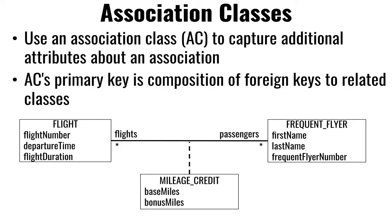In UML, it's documented differently. A mapping class would just be two references — one-to-many and one-to-many. But if you have a whole bunch of other fields describing, say, your mileage credit for a flight, your frequent flyer miles, how many base miles and bonus miles — you're not only relating two records, you're describing that relationship. In that case, we say this is an association class, and we document it with a straight line between the two as a many-to-many, and then a dotted line with the association class.